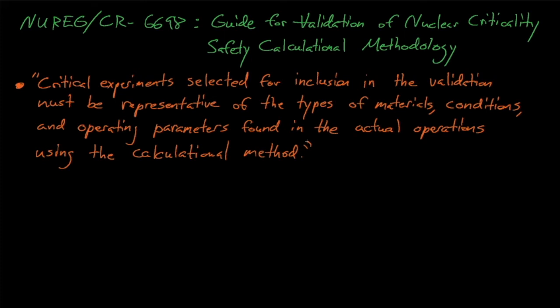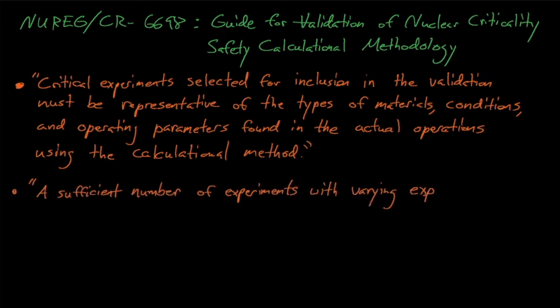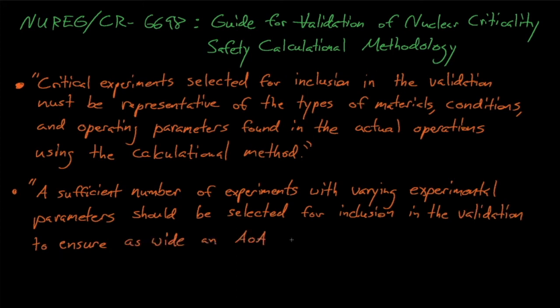NUREG 6698 also states that a sufficient number of experiments with varying experimental parameters should be selected for inclusion in the validation to ensure as wide an AOA as feasible and statistically significant results. Let's break this statement into two parts. First, we must include enough benchmark experiments to produce statistically significant results. USL calculations are generally statistical analyses, and so it makes sense that we should include enough data points to produce statistically significant predictions.